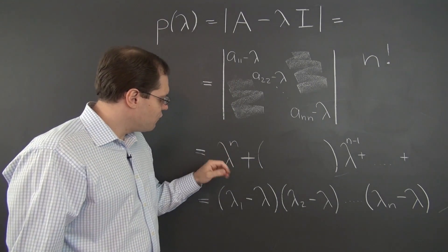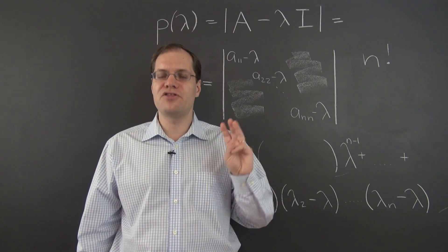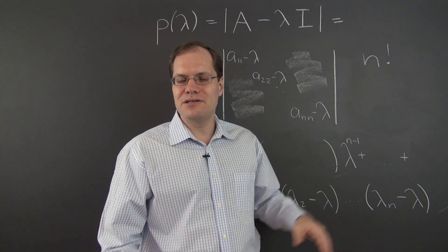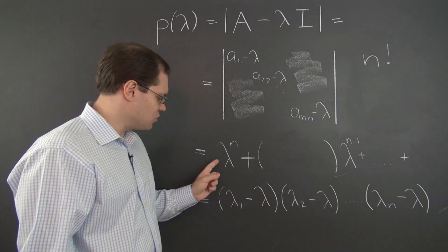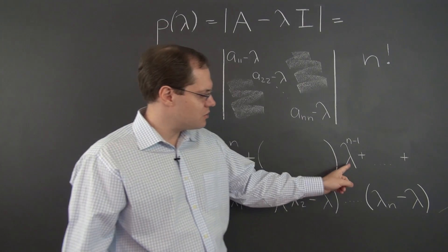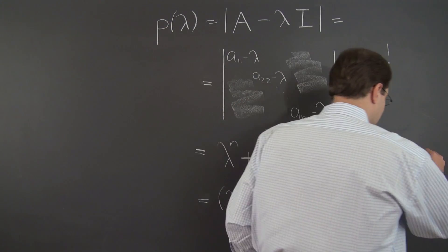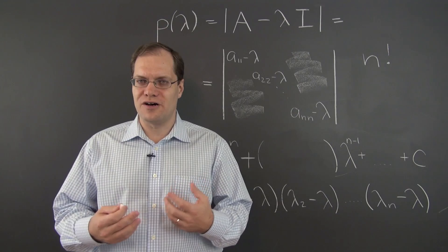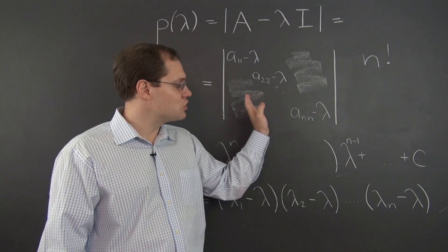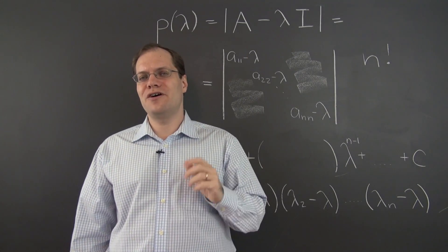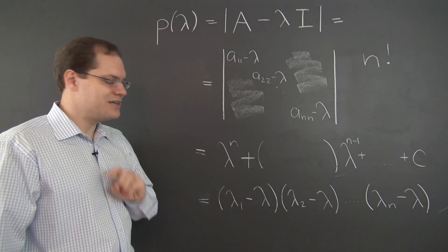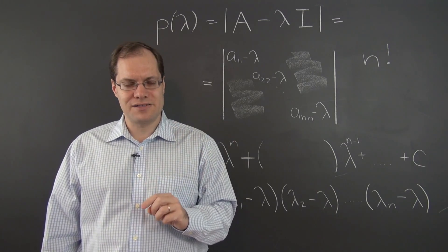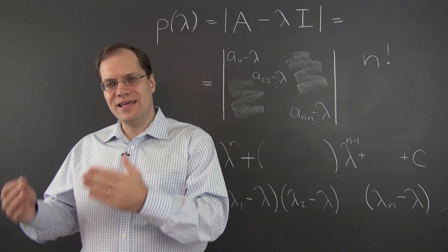But we can focus on three of the coefficients. Of all the coefficients in this polynomial, three are the most important — we can say similar things about other coefficients, but it just won't be as stark and as beautiful. Those coefficients are the leading one, the next one corresponding to lambda to the n minus 1, and the free coefficient, which we can denote by C. So let's determine what those coefficients are.